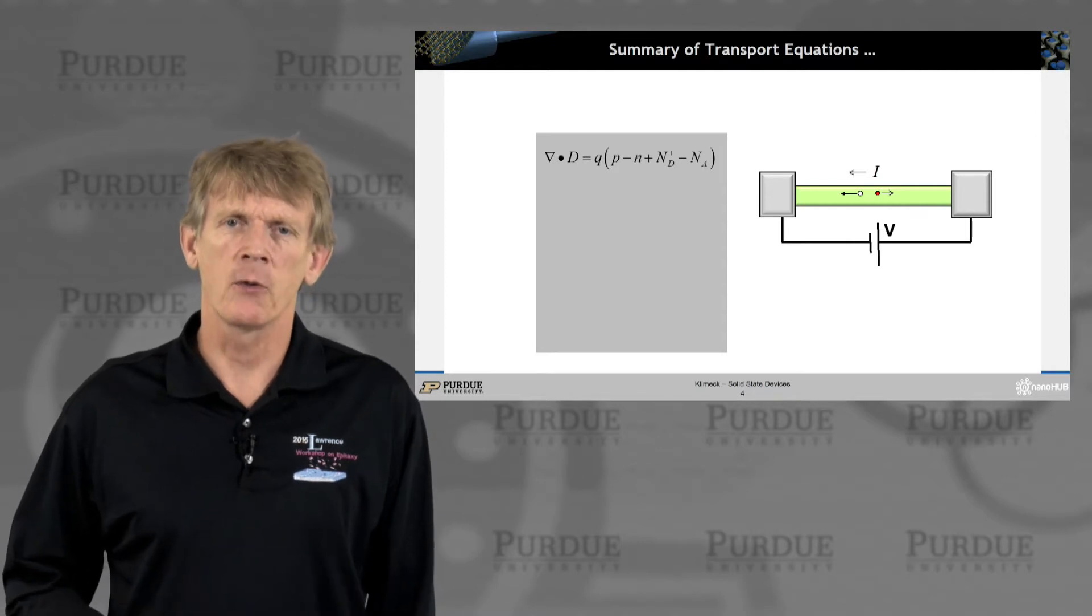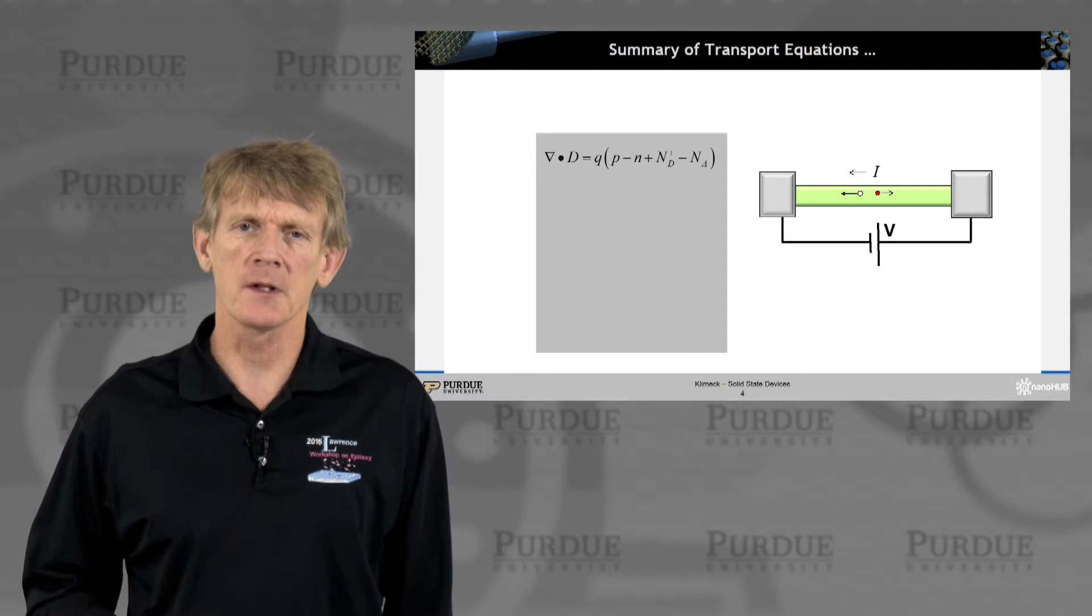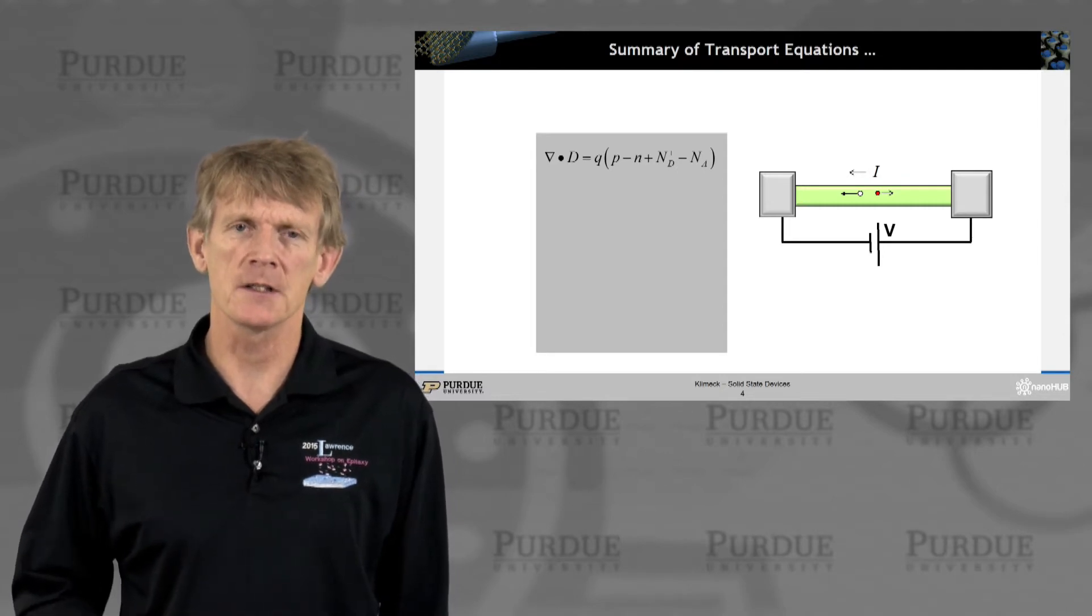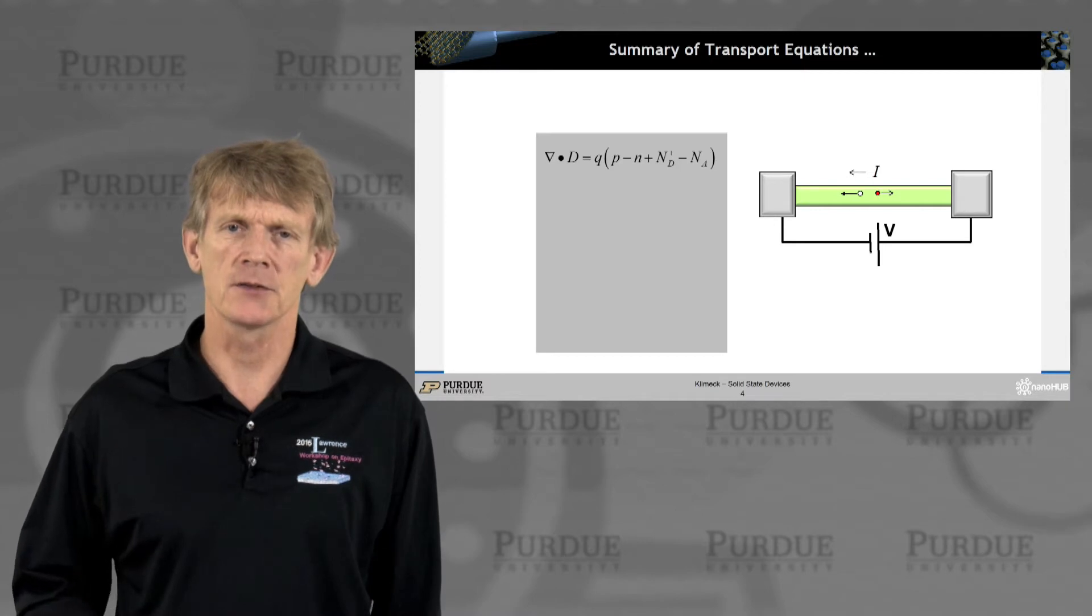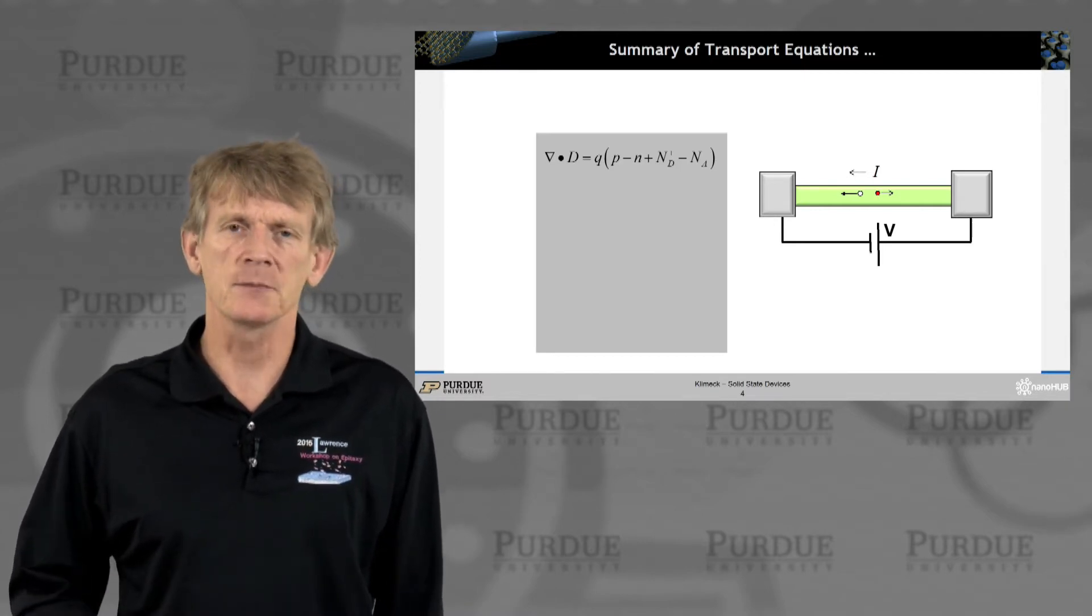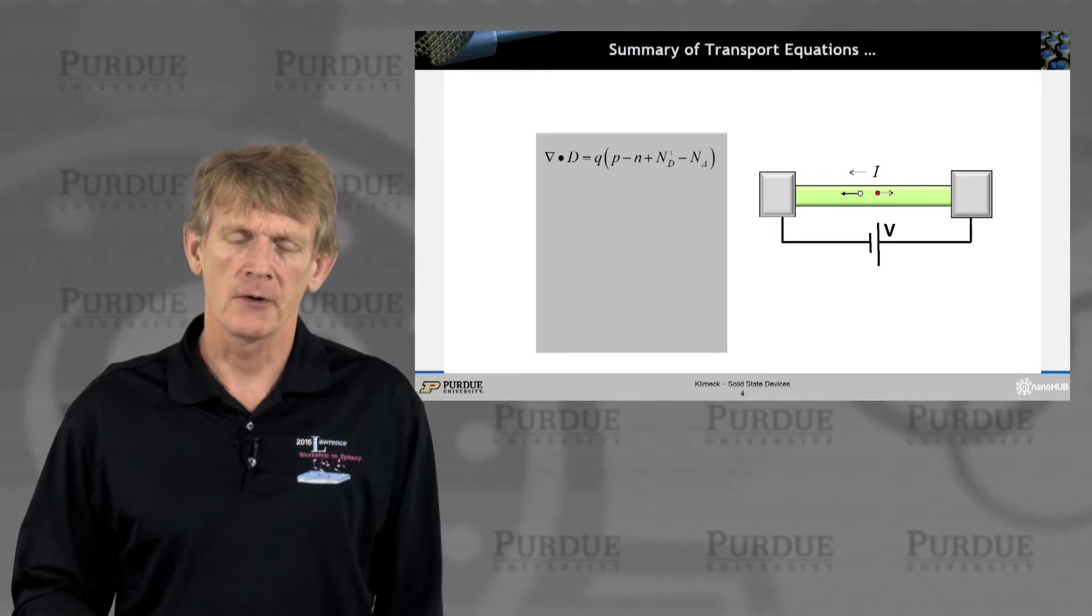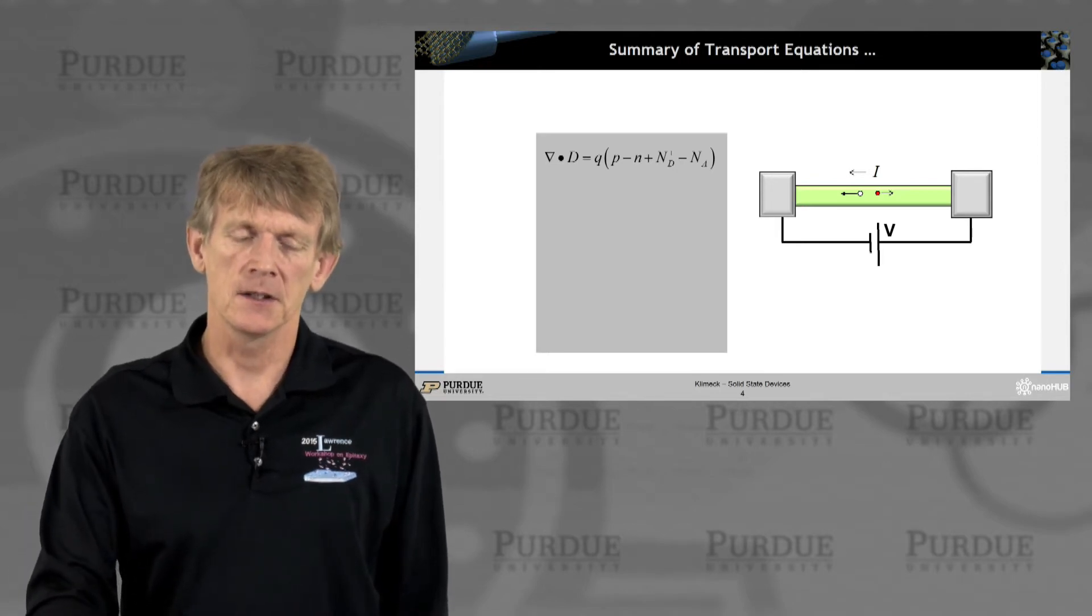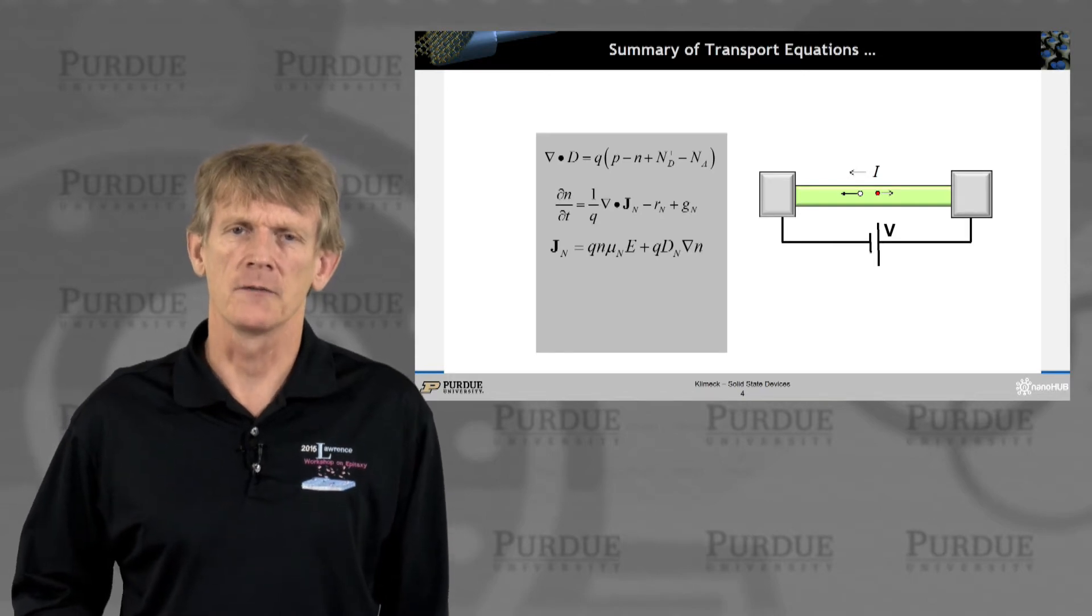There's a couple of governing equations for all of this. First you can start out with what's called Poisson equation in our world of device transport, but you might have seen this also as Gauss's law, where the gradient of the displacement field is the sum of all the charges that are in a system. So the gradient of the displacement is equal to the charges inside its surface.